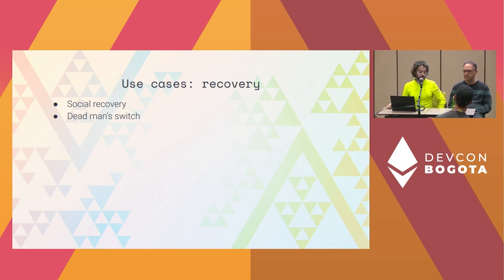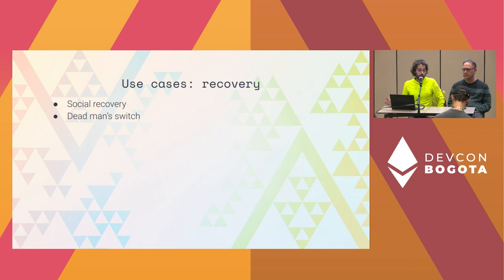Another really interesting use case is a dead man switch. Nobody lives forever, and what happens if you need to pass on your crypto but you're not around? With a dead man switch, you could have a mechanism: if you haven't accessed your account from your main key for the last year, another key that your family members have access to becomes active. Usually you're in full control, but a year later if you haven't been active, your account automatically passes to multi-sig control by your family.